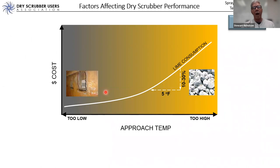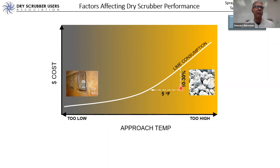Why is approach temperature important? It directly affects everything we're interested in. For lime consumption specifically: if we raise or lower the approach temperature just five degrees, it would typically affect lime consumption by 10 to 30 percent. The efficiency of the scrubbers is extremely sensitive to approach temperature — even a one-degree change has a measurable effect on SO2 removal and lime consumption.